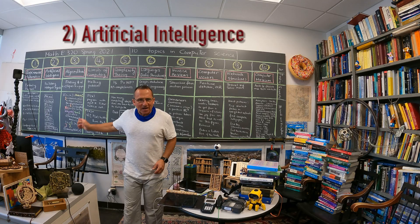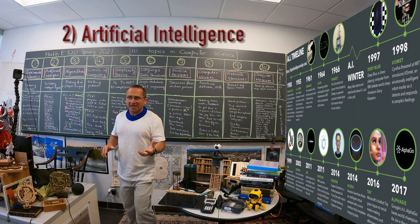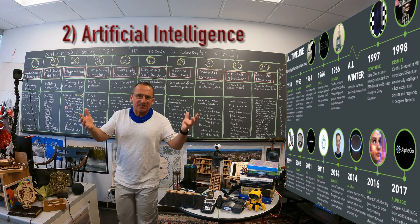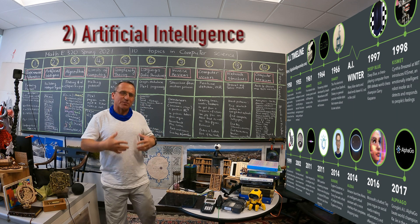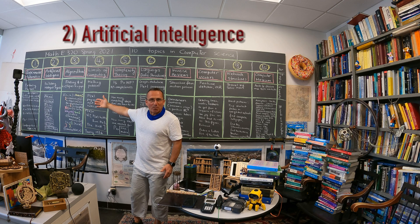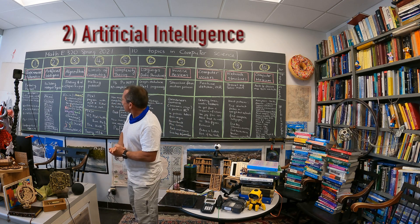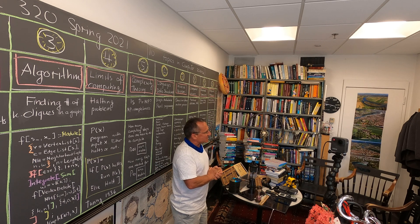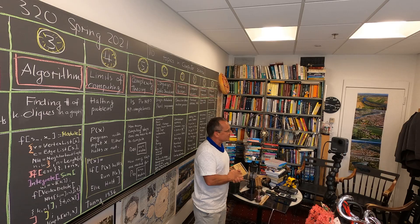Topic number two is artificial intelligence. It's very hot again. There was a development in the 60s, then there was an AI winter, but it has come back, especially since companies have started to mine this. For example, there is Alexa. Alexa, what is 7 plus 12? — 7 plus 12 is 19.